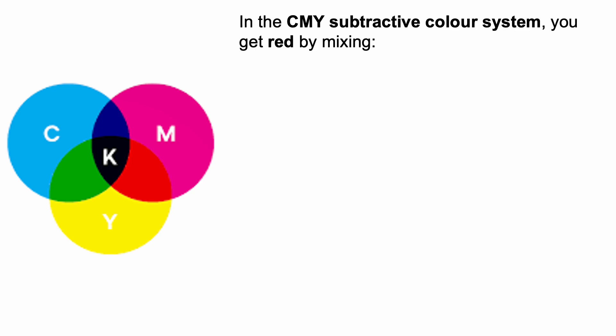In the CMY subtractive color system, how do you get red? First of all, what is CMY? C stands for cyan color, M is magenta and Y is yellow. K stands for key, the dark colors, black color, which is added in printers.